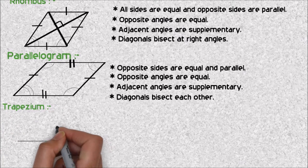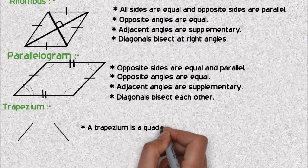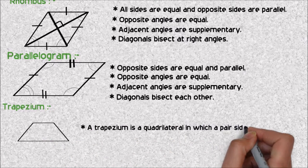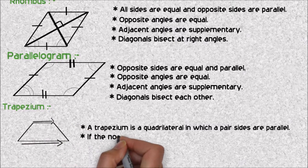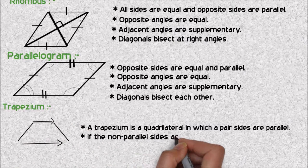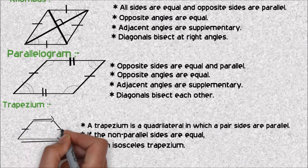Let's see the last shape, that is trapezium. A trapezium is also a quadrilateral, but only a pair of sides are parallel. If the non-parallel sides are equal, we call it an isosceles trapezium. Let's see the constructions tomorrow.